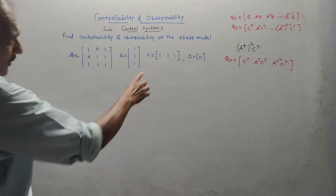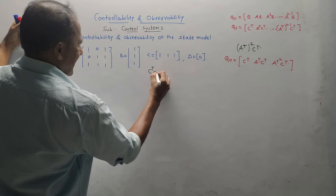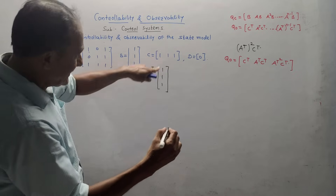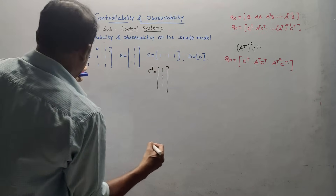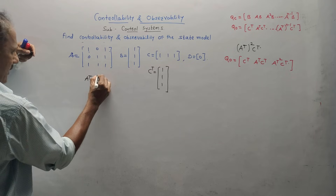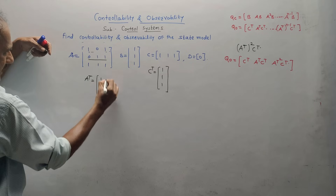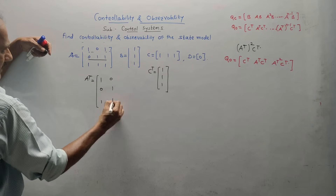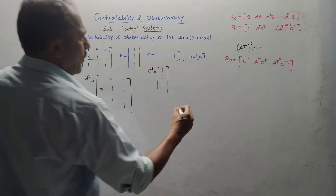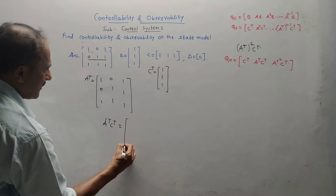C transpose: since C is already a row matrix, writing it as a column matrix. Then A transpose: interchanging rows and columns of A, so the first row [1, 0, 1] becomes column [1; 0; 1], second row [0, 1, 1] becomes column [0; 1; 1], third row [1, 1, 1] becomes column [1; 1; 1]. This is A transpose. Let us perform the calculation of A transpose into C transpose.